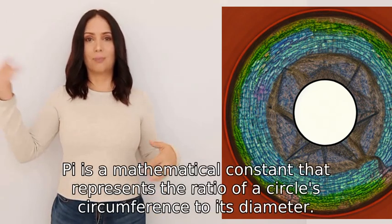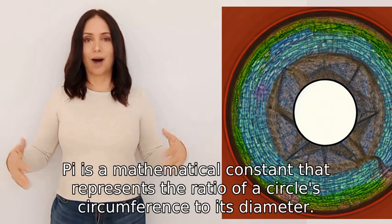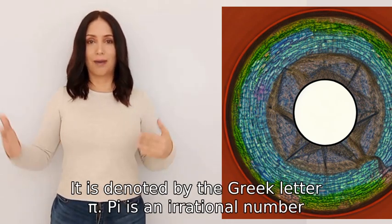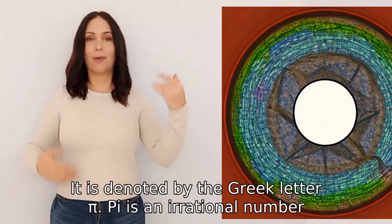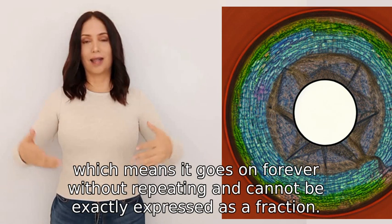Pi is a mathematical constant that represents the ratio of a circle's circumference to its diameter. It is denoted by the Greek letter π. Pi is an irrational number, which means it goes on forever without repeating and